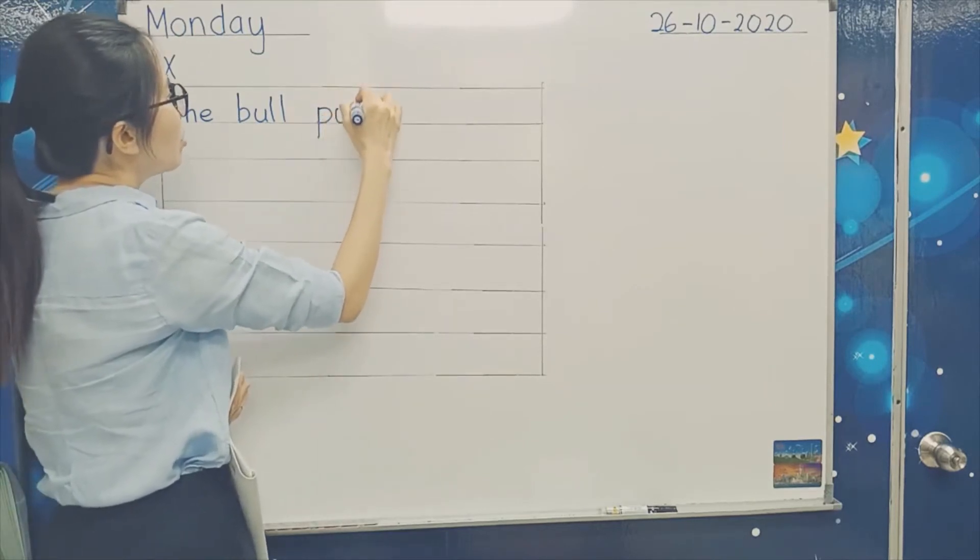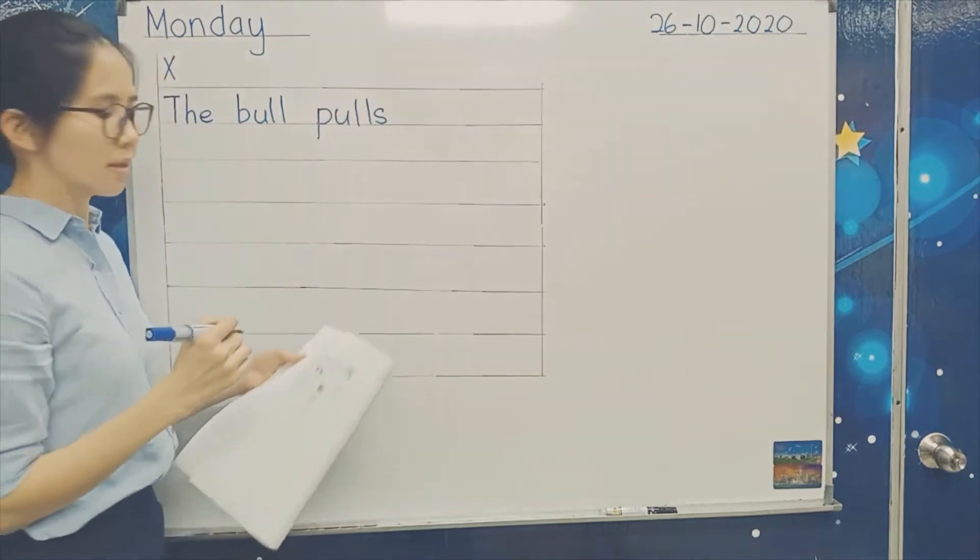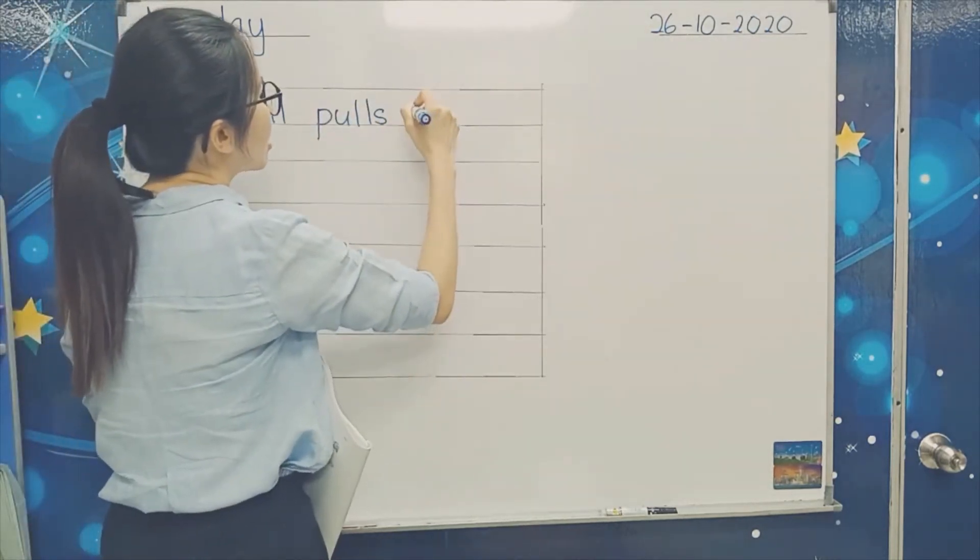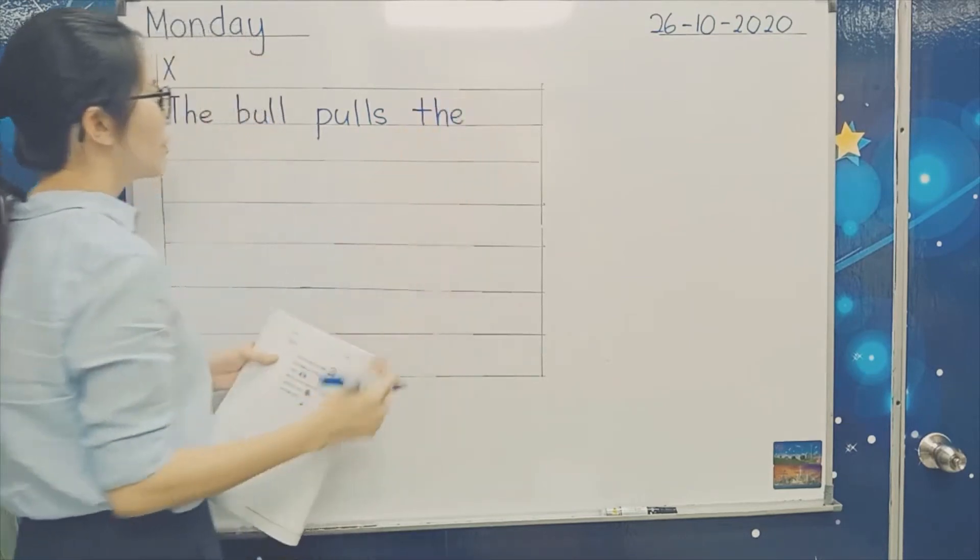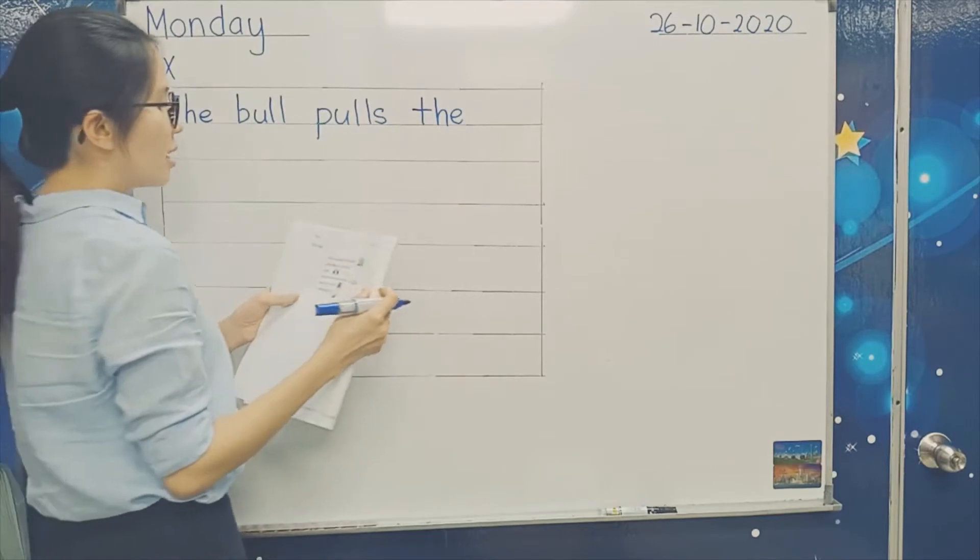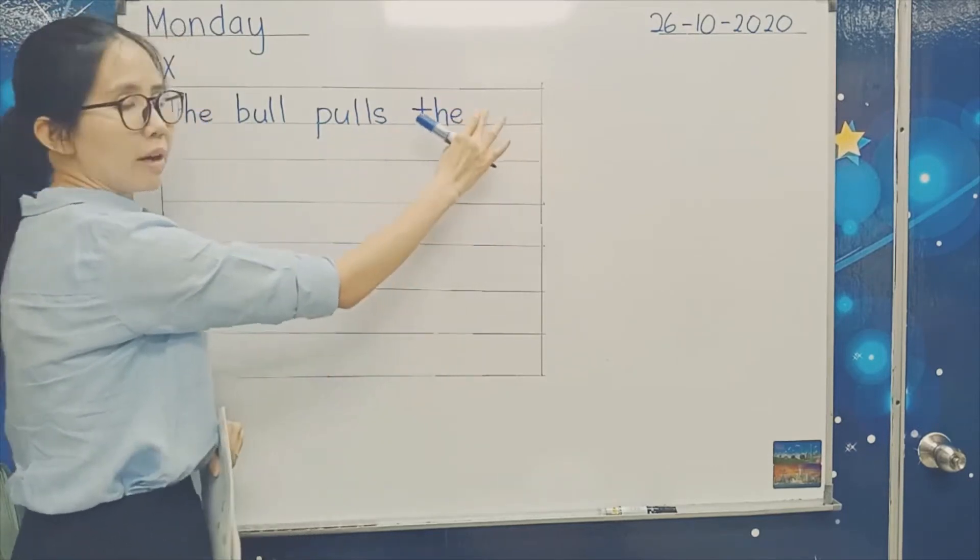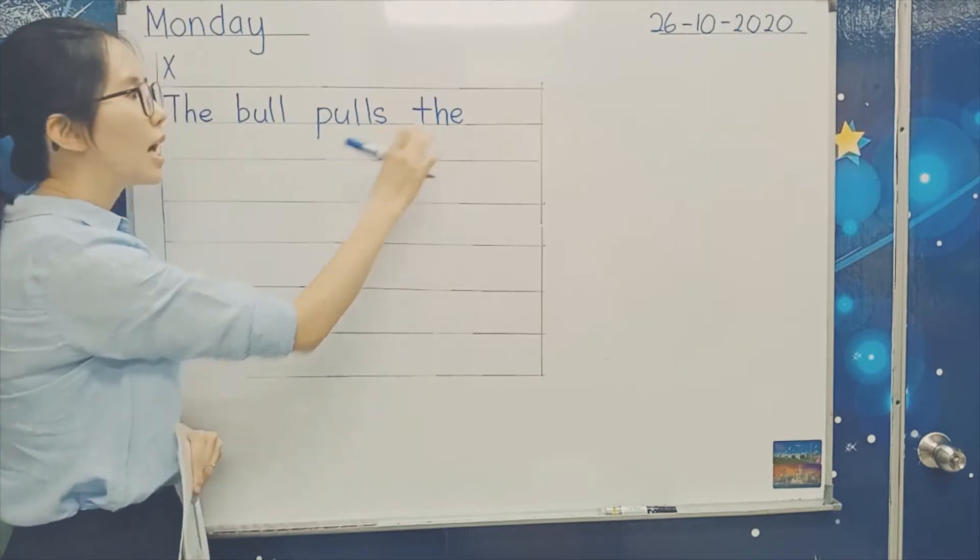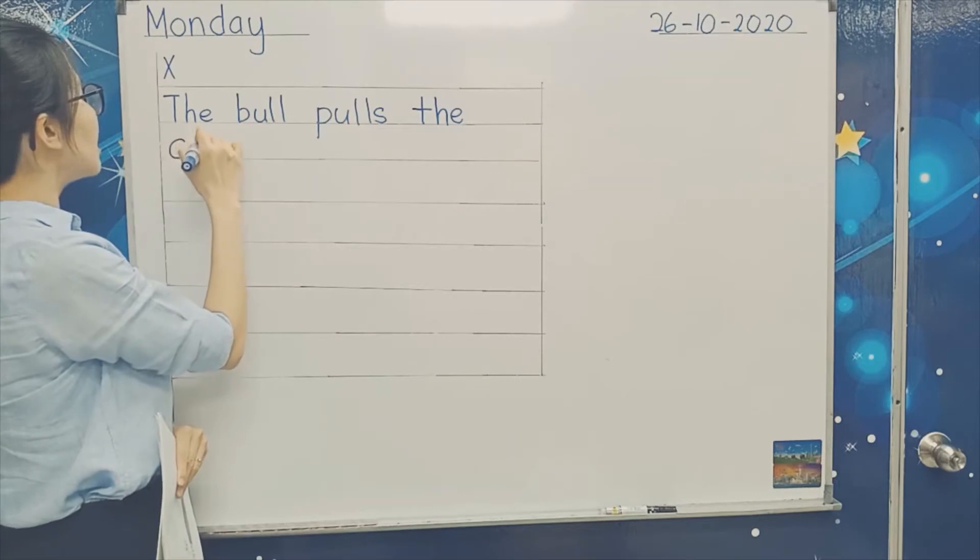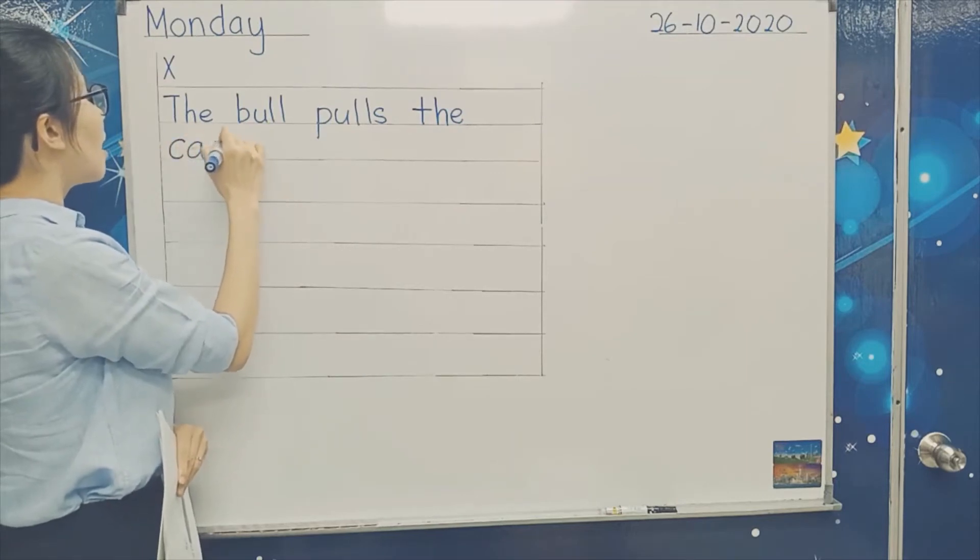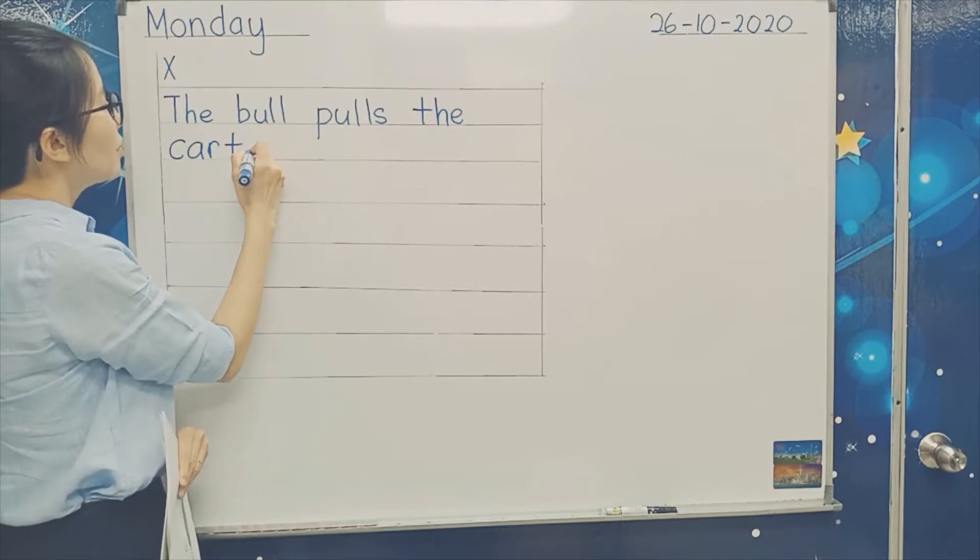Bull, P-U-L-L-S, pulls. The bull pulls. And then you put one finger, T-H-E, the, cart. And then if you put one finger, you put T-H-E, the. If I have no more space here, but if you have space you can continue writing. I have no more space so I am going to write down here.